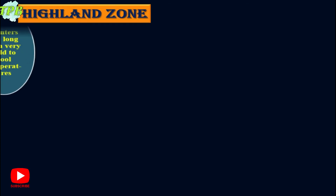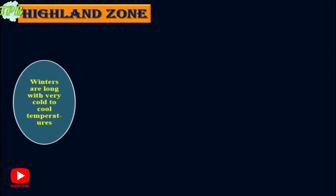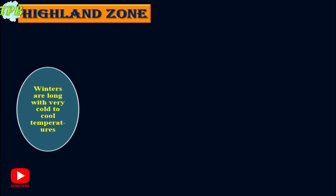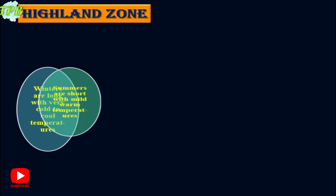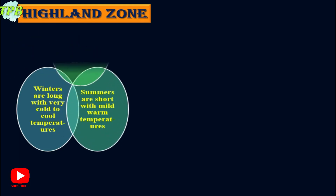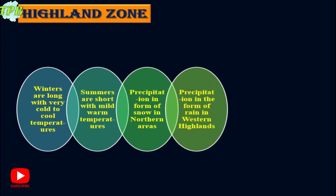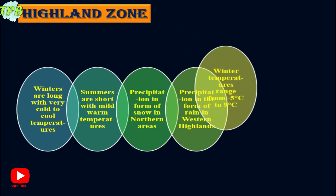Now let's look at these zones individually. The highland zone has winters with cold to cool temperatures. Summers are short with mild warm temperatures. Precipitation in the northern highland zone is mostly in the form of snow, whereas in the western highlands precipitation is in the form of rainfall.